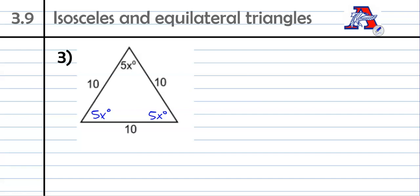A couple ways you could do it. You could do 5x plus 5x plus 5x equals 180. That would work. Or you can just remember that in every single equilateral triangle, all of the angles are 60 degrees. So really 5x is just equal to 60. Divide by 5 and x is equal to 12. I think that's probably the easiest way to go about that problem there.